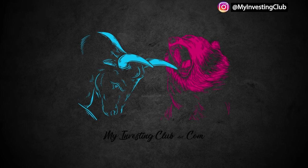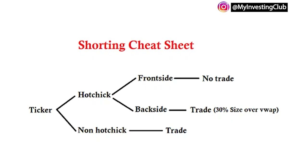So this is something that I made that can be super simple and applied. There's also a longing one as well. I'll start with the shorting one. It just kind of applies the MIC process in a way that is super simple. And I think first and foremost, it's really the simplicity that's key. So we start off, obviously we have a ticker — is it the hot chick? Is it the non-hot chick? If it's a non-hot chick, then automatically you want to be looking at that for a potential trade if it's popping. And if it's a hot chick and it's front side, that's going to be no trade. And if it's backside, then it will be a trade, but 30% size over VWAP. There are different pre-market rules that Alex uses and a lot of other people use as well, but it's just something that you can learn to implement if you're having trouble with decision making or stock selection.